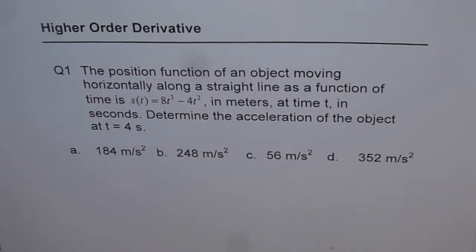Four choices are: a. 184 meters per second squared, b. 248 meters per second squared, c. 56 meters per second squared, and d. 352 meters per second squared.